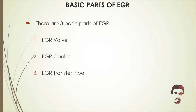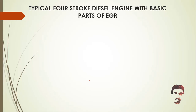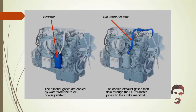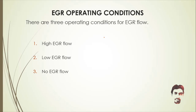There are three basic parts of the EGR system: the EGR valve, EGR cooler, and EGR transfer pipe. On the engine, the EGR valve is located here, the EGR transfer pipe is shown in blue, and this is how the EGR cooler is localized. The cooled exhaust gas then flows through the EGR transfer pipe into the intake manifold.